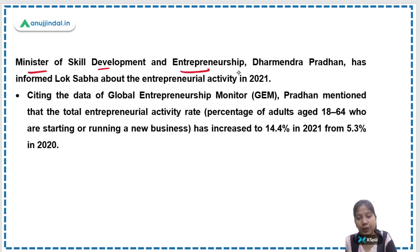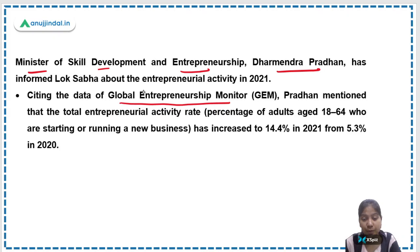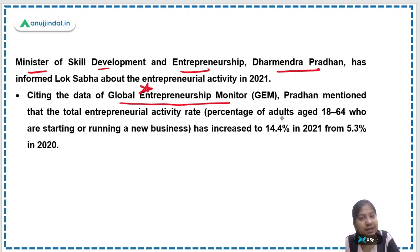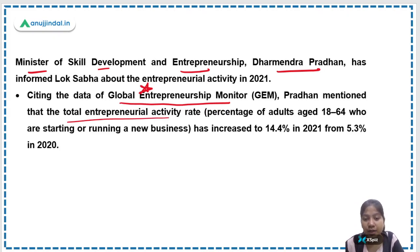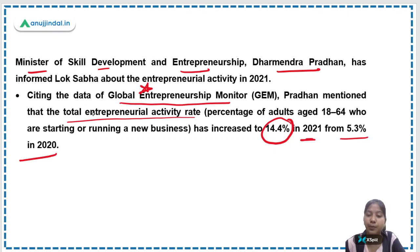Recently, Minister of Skill Development and Entrepreneurship Dharmendra Pradhan gave important data in the Lok Sabha, citing the Global Entrepreneurship Monitor. The total entrepreneurial activity rate in India has increased to 14.4% in 2021 from 5.3% in 2020. The entrepreneurial activity rate is the percentage of adults aged 18 to 64 who are starting or running a new business.